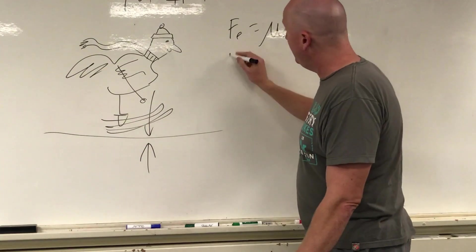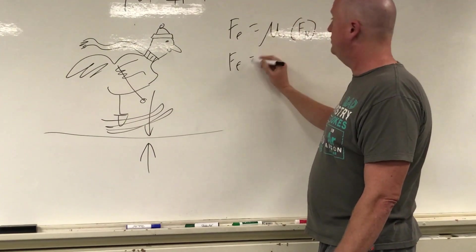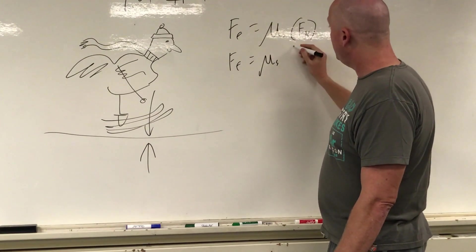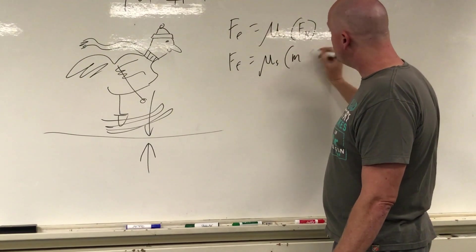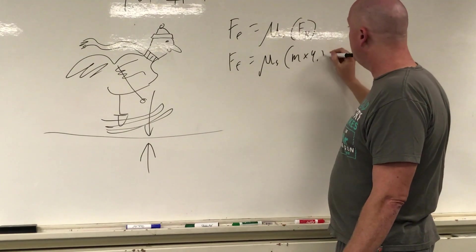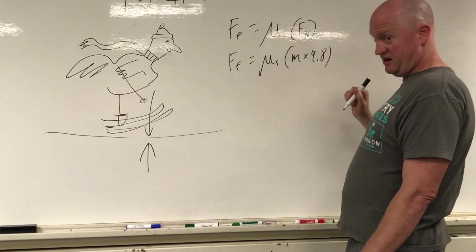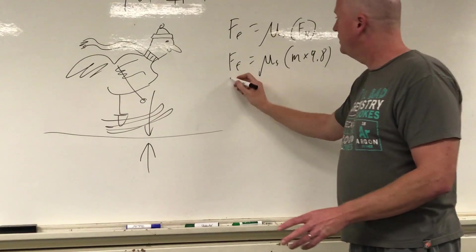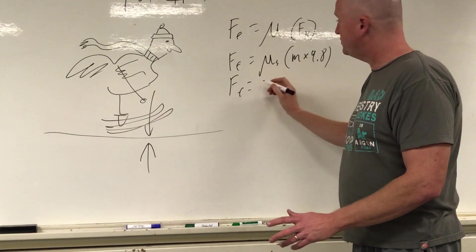And every earthling should know how to find the force of gravity. So that would be mu static times your mass times 9.8. 9.8 earthlings, yes 9.8. Let us get started.